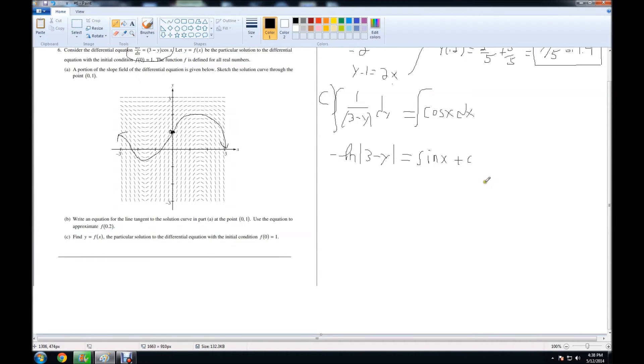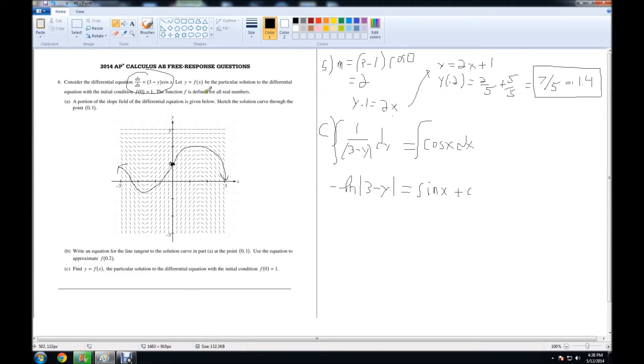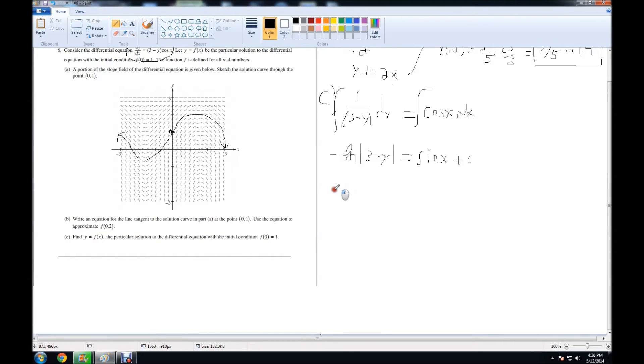Now, we're going to use the initial condition they gave us, which was f(0) = 1. So for y, we put 1, and for x, we put 0. So we get negative natural log of the absolute value of (3-1), which is 2, equals sine of 0, which is 0, plus C. So we get the final solution of C equals negative natural log of 2.